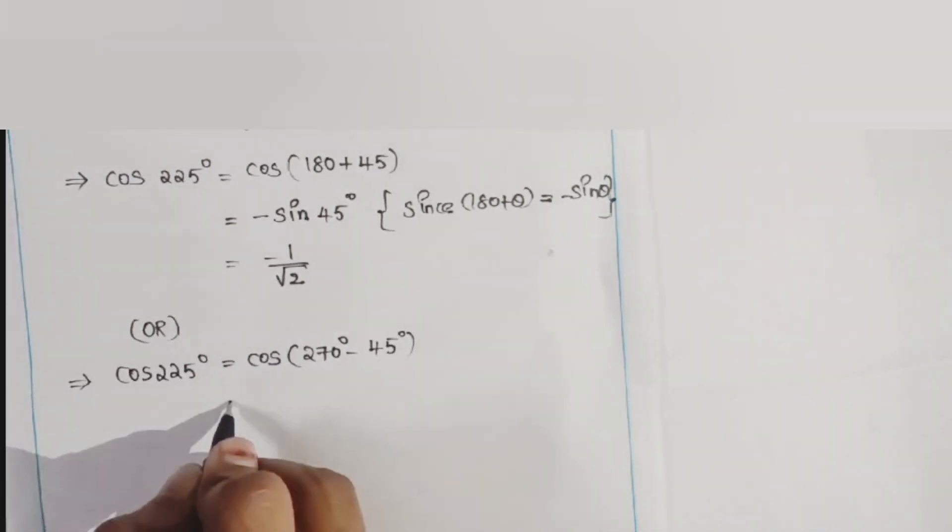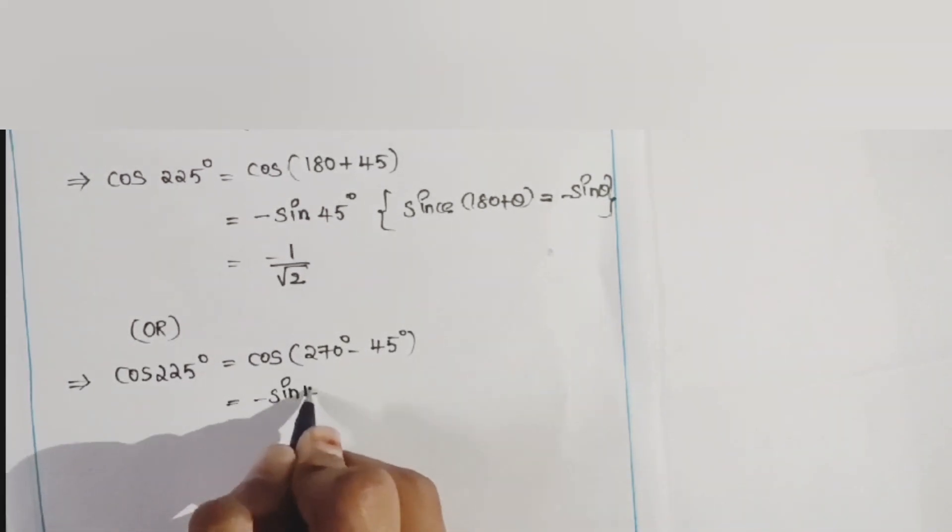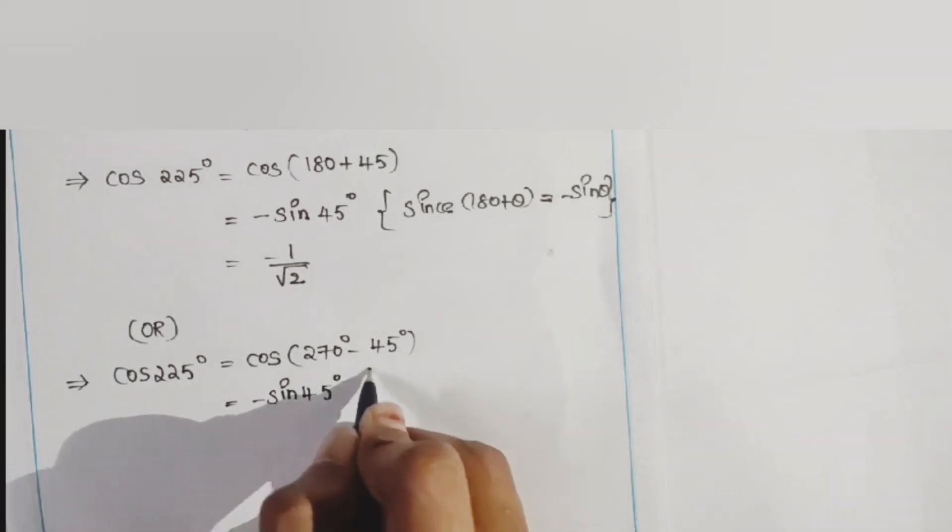So here is a formula called cos(270° - θ), that is minus sin θ. It is under the form cos(270° - θ), which equals minus sin θ. So here is the solution.